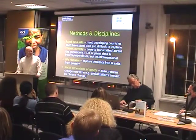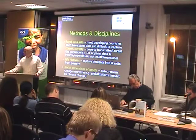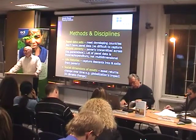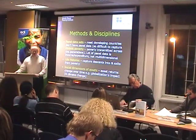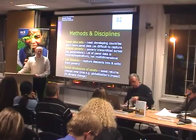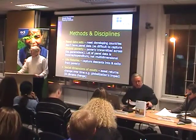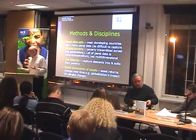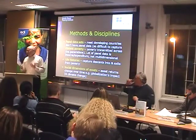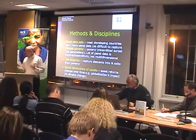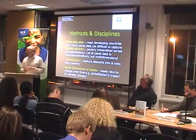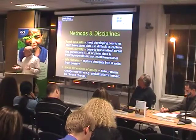It's difficult to capture chronic poverty without investing in such information. One thing we find with existing panel data sets is that a lot of panel data we have at the moment is very much income and expenditure measures — very much monetary measures. There are very few panel data sets that really capture the multidimensionality of poverty.